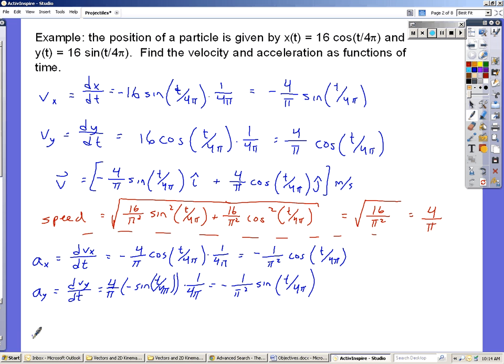If we find the magnitude of the acceleration, I encourage you to do this on your own, pause the video now if you need to. Anyway, we get the magnitude of the acceleration, you'll find that it's equal to 1 over π squared. In other words, the acceleration is also constant in magnitude and changing directions, which again is what we expect from uniform circular motion.